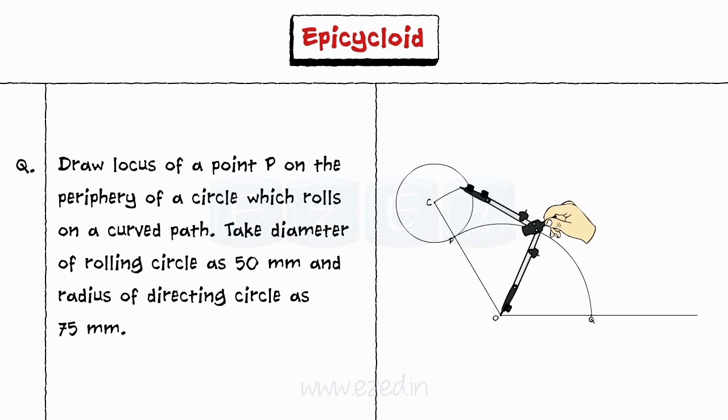Step 4: Draw an arc through point C. This line is called locus of center C.